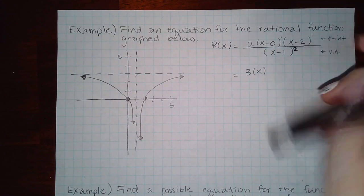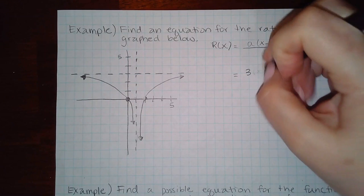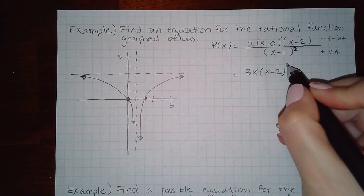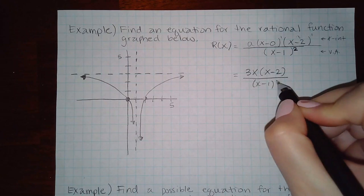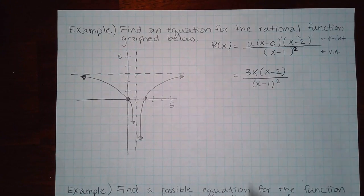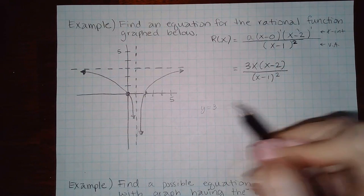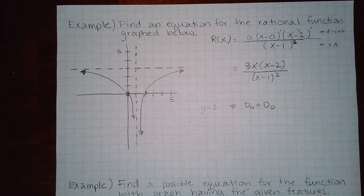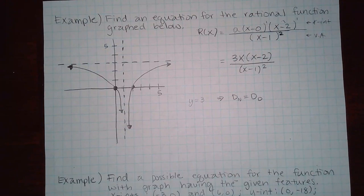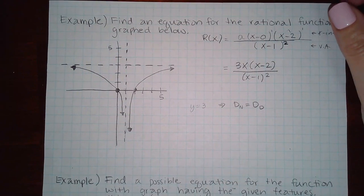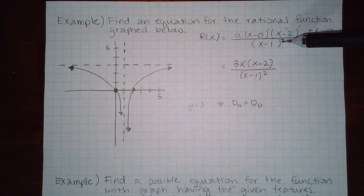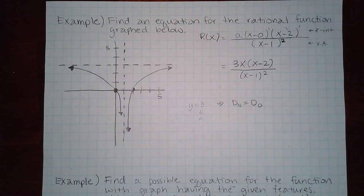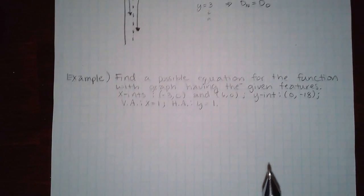So it should be three, and you don't have to write x minus zero, you can just write x. You don't even need the parentheses, you can just write it as three x times x minus two to the power one over x minus one squared. The horizontal asymptote equal to three means that the degree of the numerator has to equal the degree of the denominator.